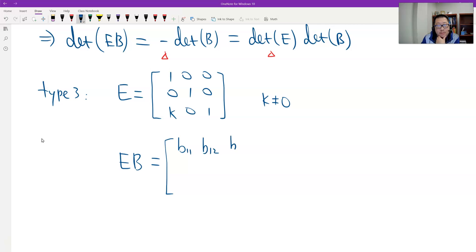And the last row changed. The first row multiplied by k, which is B31, this time plus k times B11. The same here is B32 plus k times B12. The last, B33 plus k times B13.